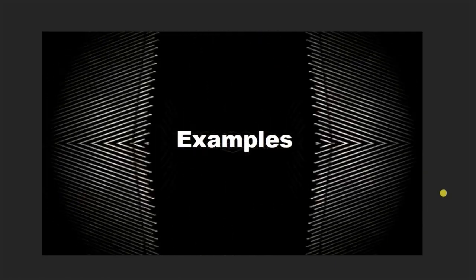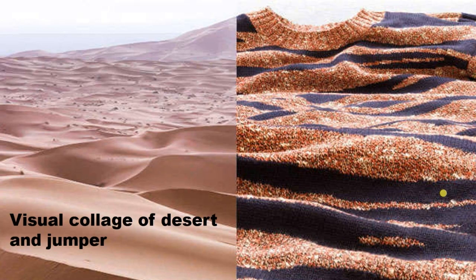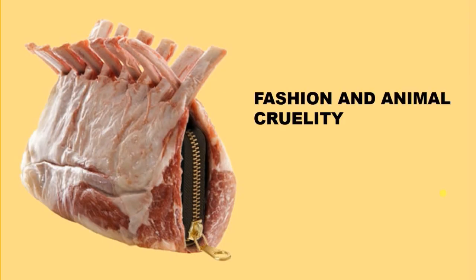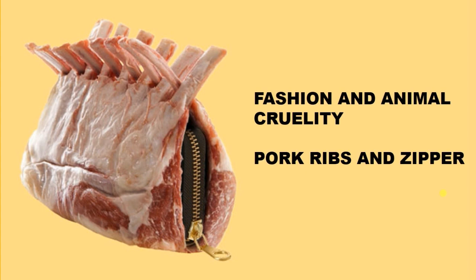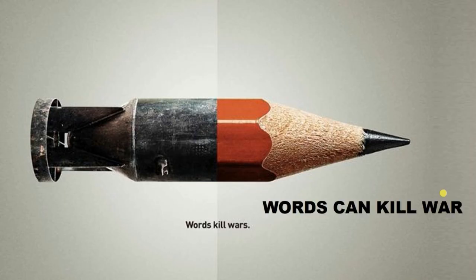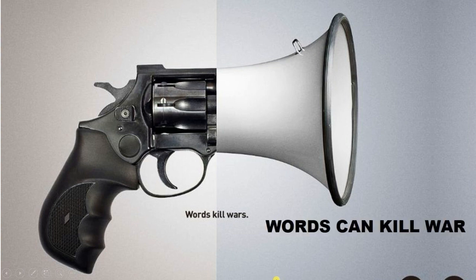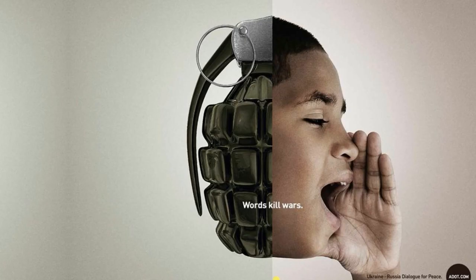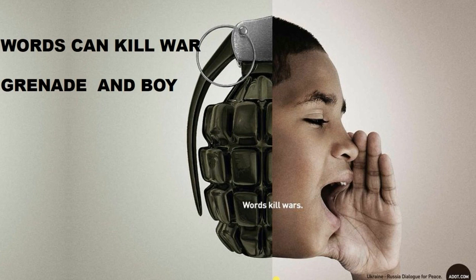Let's understand this concept through examples. This visual collage has half desert and half jumper. The next image shows fashion and animal cruelty, where poke ribs and a zipper are placed together. Then there's an advertisement about words and wars where a bullet and pencil are put together, then a pistol and a mic, and a grenade with a boy who is shouting. Putting together these two contrasting visuals creates a new meaning and a new narrative — that is the power of juxtaposition.